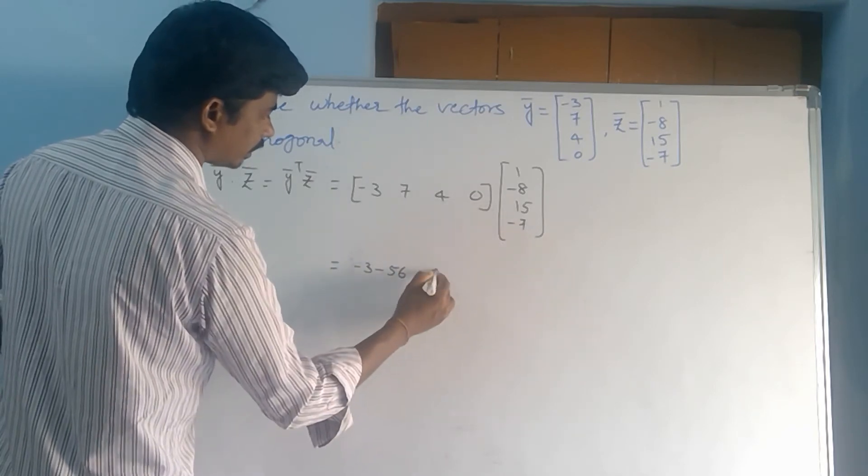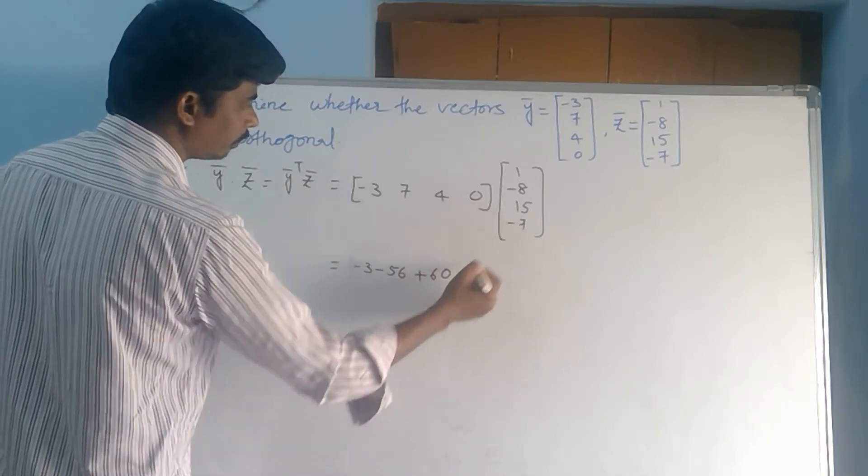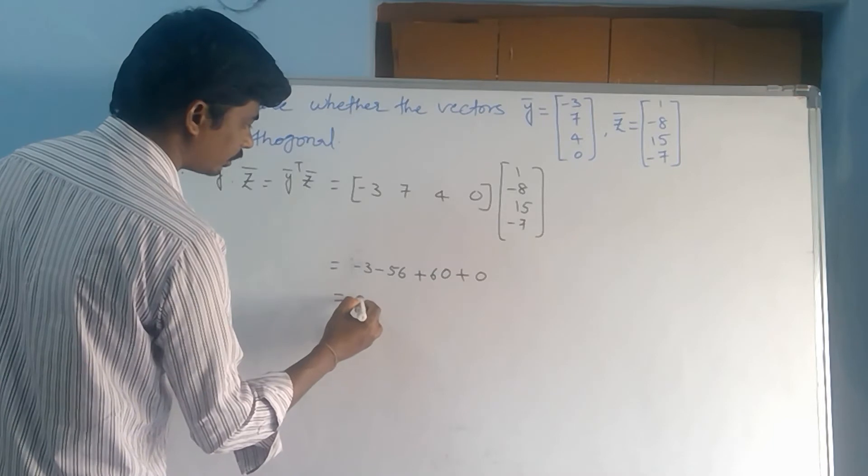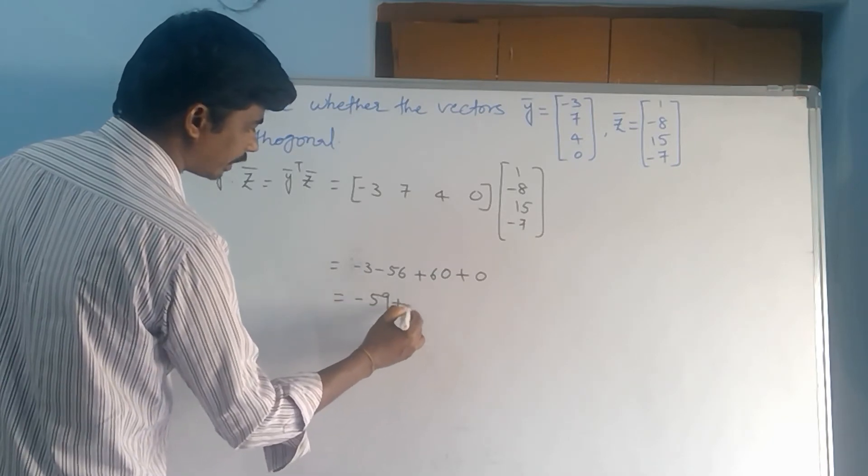What is that? Plus 60, plus 0. That equals minus 59 plus 60.